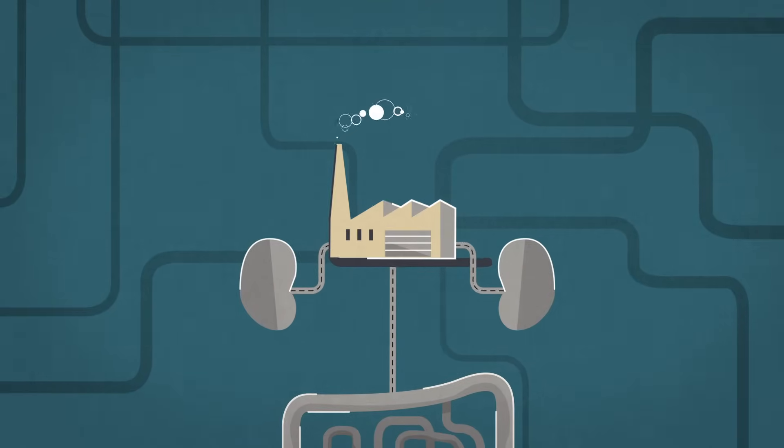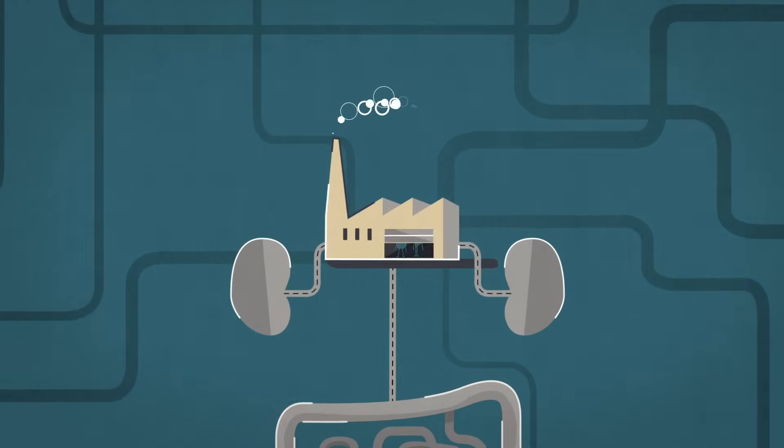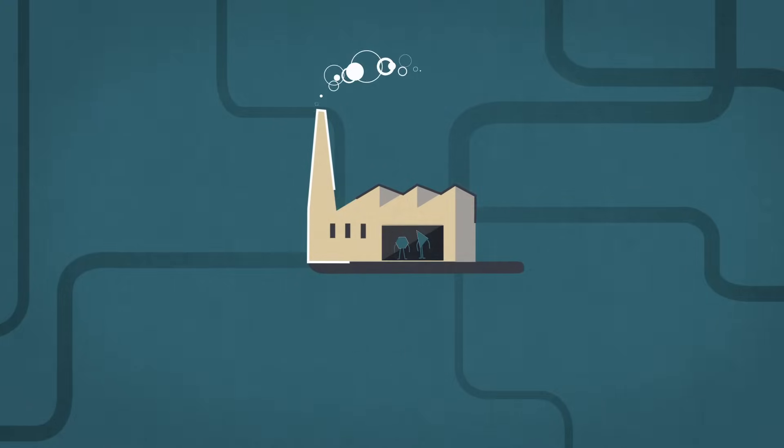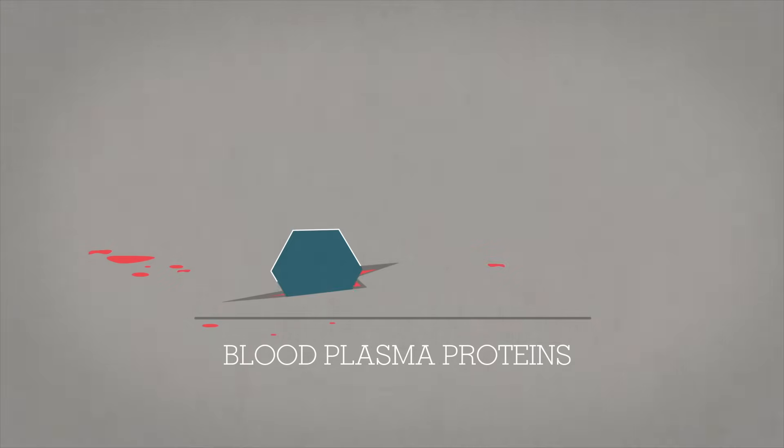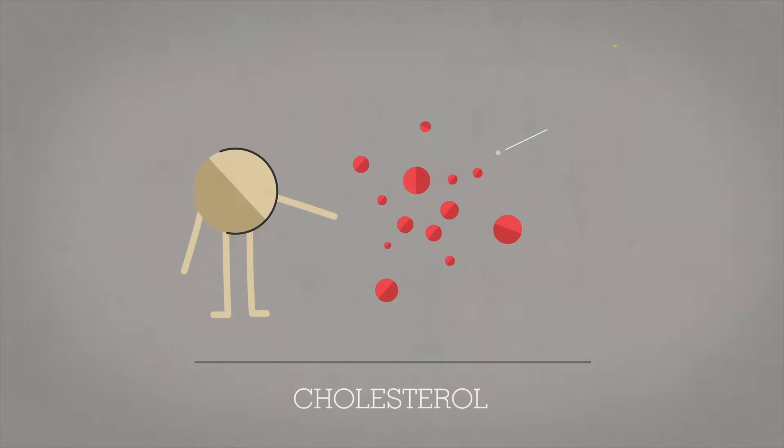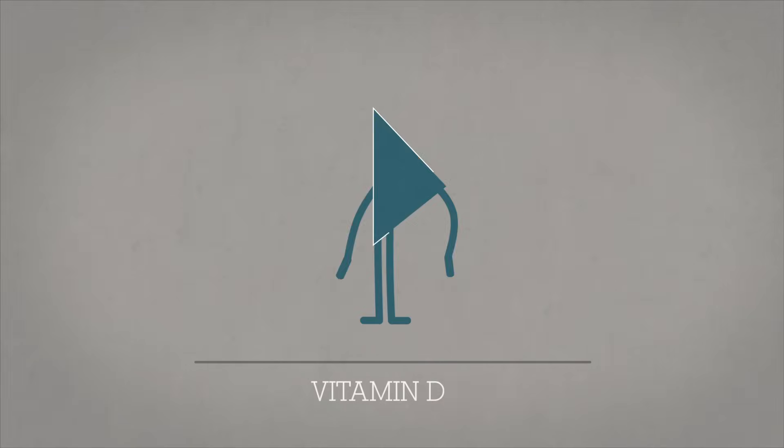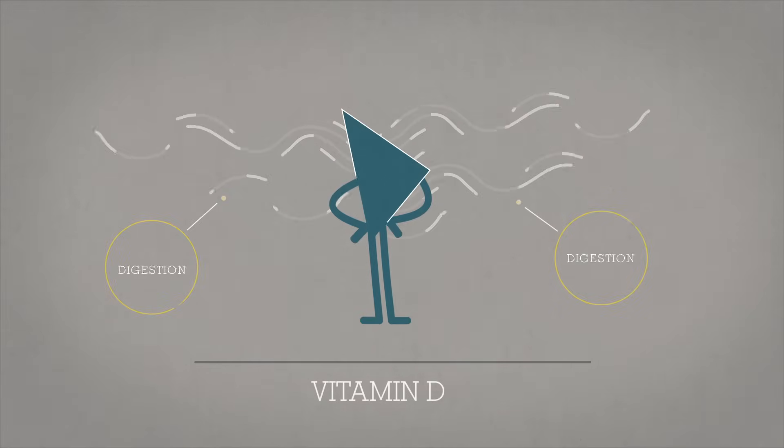Of course, we wouldn't consider the liver a factory if it didn't also manufacture things. This organ makes everything from various blood plasma proteins that transport fatty acids and help form blood clots, to the cholesterol that helps the body create hormones. It also makes vitamin D and substances that help digestion.